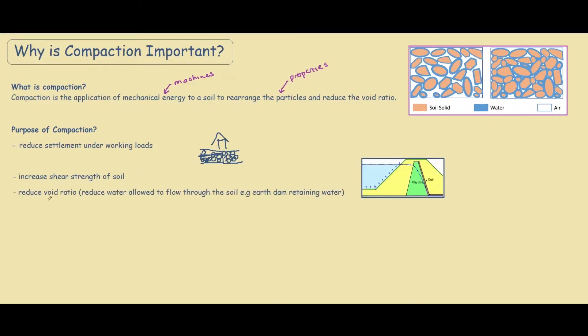We also reduce the void ratio so that water is not allowed to flow through the soil. This is useful in earth dams when we're trying to retain the water on one side.